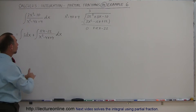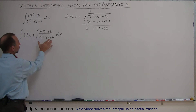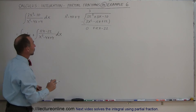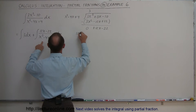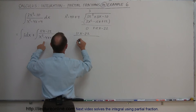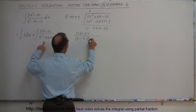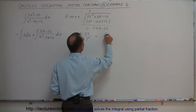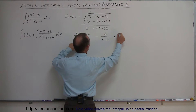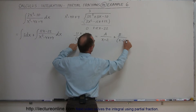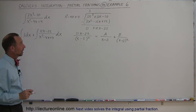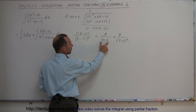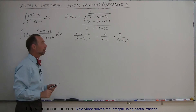Now this looks a little more typical. What we want to do is use partial fractions to make this into a simple form we can integrate. We want to rewrite the integrand as 12x minus 22 divided by x minus 2 quantity squared. That means we can write this as A over x minus 2 plus B over x minus 2 quantity squared — because we're repeating a linear factor, we write A over the first factor plus B over the first factor squared.